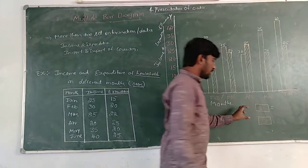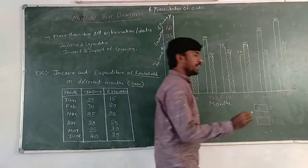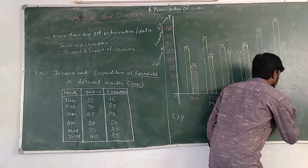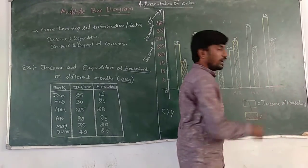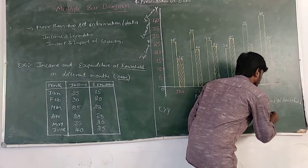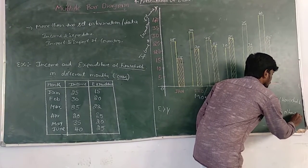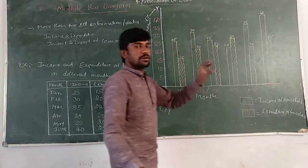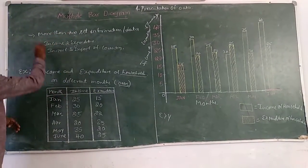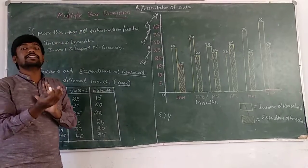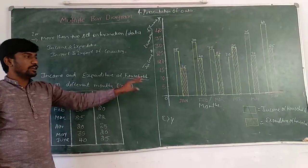After drawing all the bars, we have to show a legend indicating which bar represents income and which one represents expenditure. The empty rectangular bars are showing the income of the household. The rectangular bar with a cross line is showing the expenditure of the household. This is your multiple bar diagram. It presents more than two sets of data for comparison. Income and expenditure are the related variables, and for comparing them we use the multiple bar diagram.